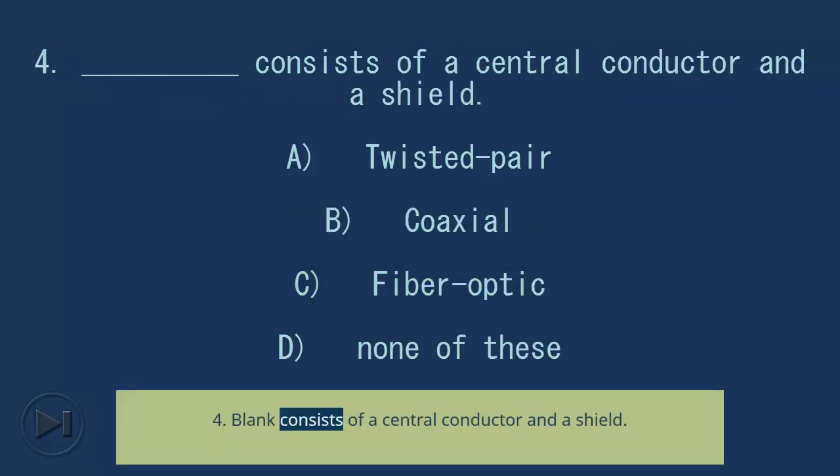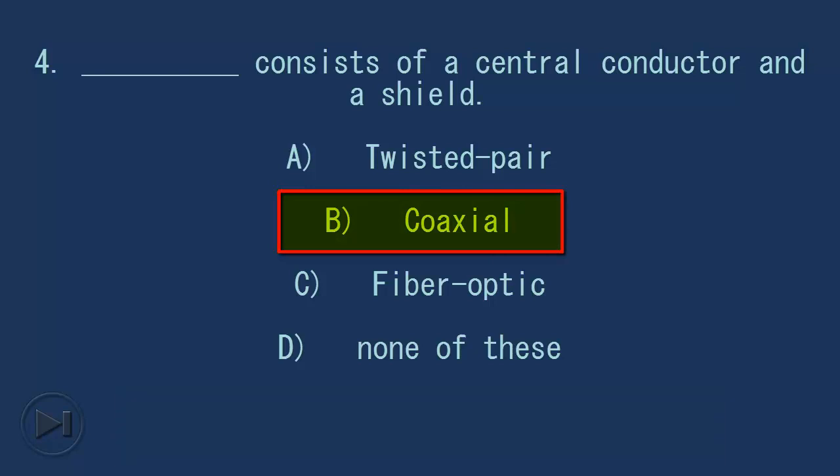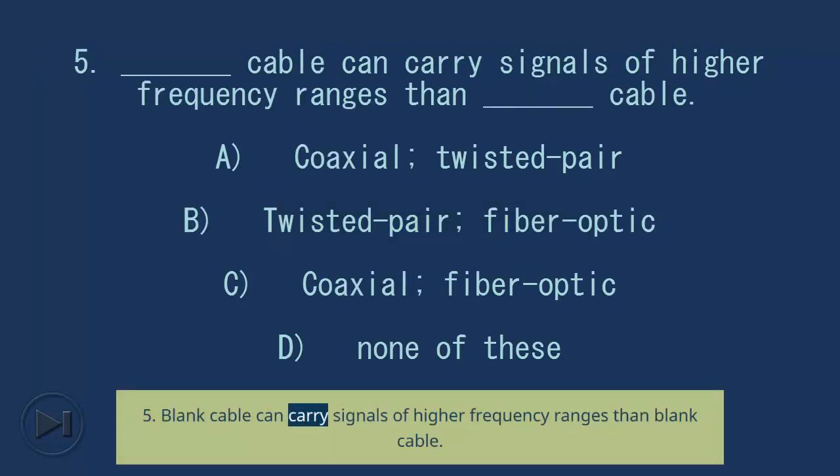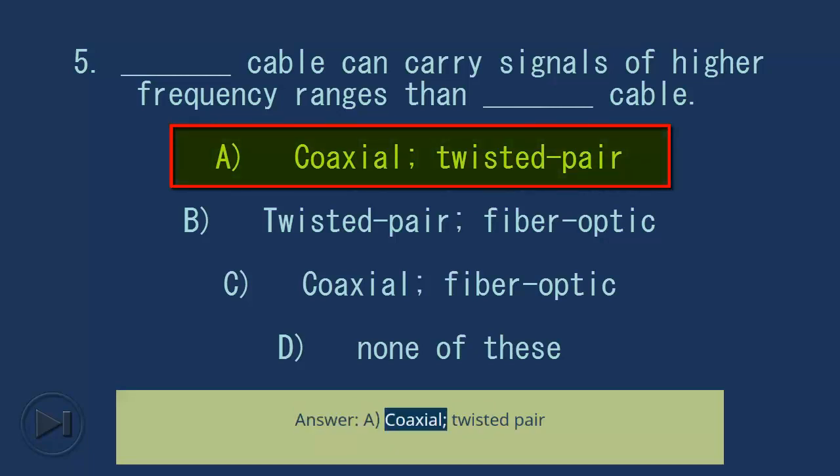Question 4: Blank consists of a central conductor and a shield. A) twisted pair, B) coaxial, C) fiber optic, D) none of these. Answer: B, coaxial. Question 5: Blank cable can carry signals of higher frequency ranges than blank cable. A) coaxial, twisted pair, B) twisted pair, fiber optic, C) coaxial, fiber optic, D) none of these. Answer: A, coaxial, twisted pair.